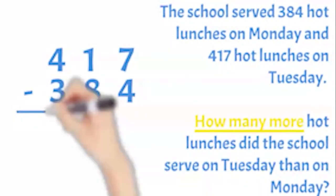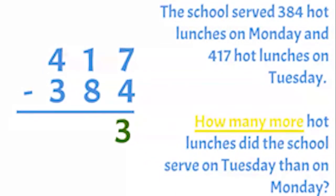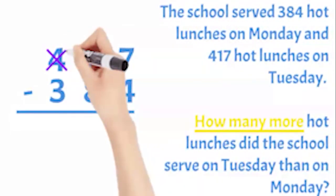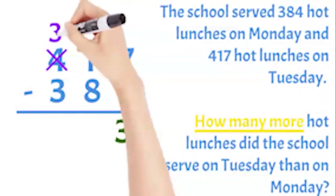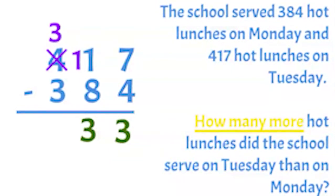Remember to start with the smallest place value and you can borrow from the next place value if you need to. In the ones place, 7 minus 4 equals 3. In the tens place, I need to borrow. I will exchange 100 and get 10 tens, so 11 minus 8 equals 3. Since I borrowed 100, now I subtract 3 minus 3 and I get 0.